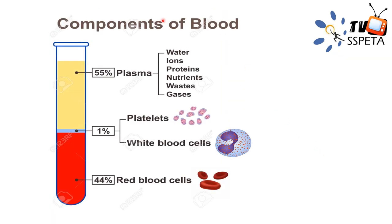If we allow blood to centrifuge and stand, we can see how they are separated. The 55% is plasma containing water, ions, protein, nutrients, waste, and gases. The 1% is made up of platelets and white blood cells. And the 44% are red blood cells.